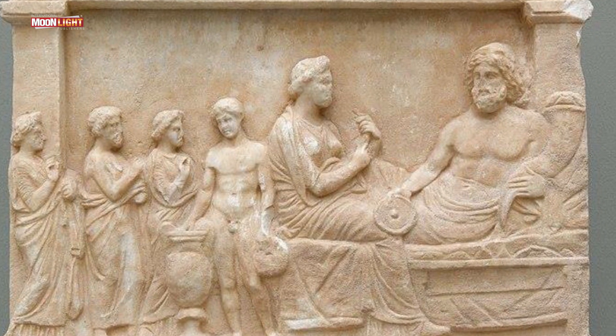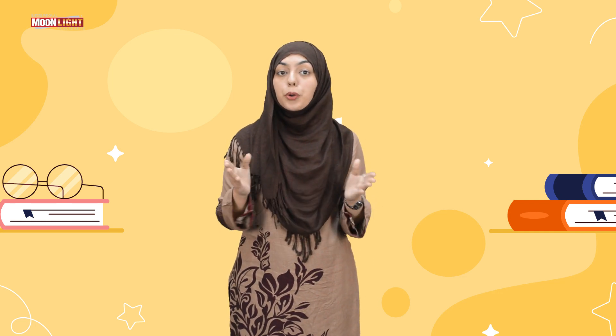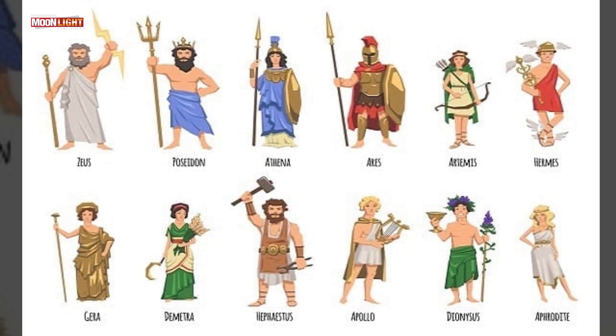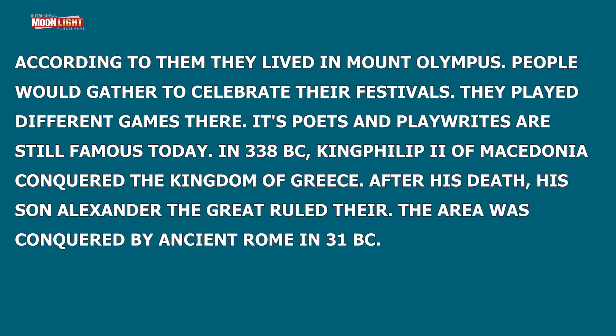The ancient Greeks believed in many gods. They built different temples and shrines where they worshipped. Their gods included the god of sun and music, goddess of fertility, goddess of war, and the messenger of the gods. According to them, the gods lived on Mount Olympus. People gathered to celebrate festivals and played different games. The poets and playwrights of ancient Greece are still famous today.